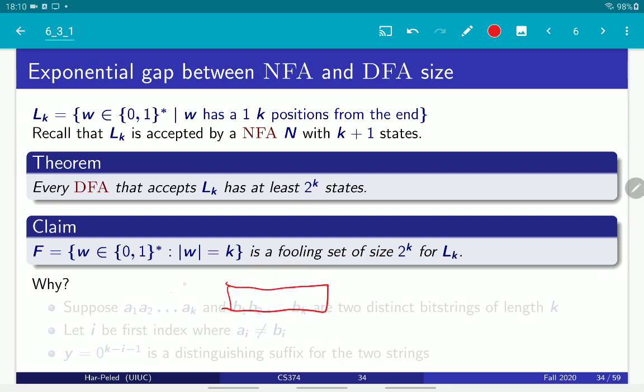Because take 2 strings, X and Y, from this set that have K bits. Since they are 2 different strings, there must be a bit that they disagree on.